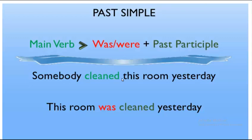'Somebody cleaned this room yesterday.' This sentence is in the past — 'cleaned.' The object is 'this room,' so we start with 'this room,' followed by 'was' (singular), then the past participle 'cleaned,' and 'yesterday.' So: 'The room was cleaned yesterday.' The focus is on the action.